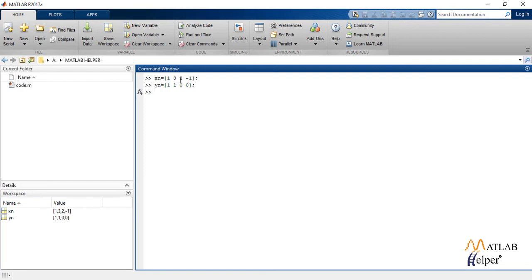Now to compute the convolution, we write answer, a variable, is equal to convolution of xn with yn. And this is the sequence we obtained after computing linear convolution.